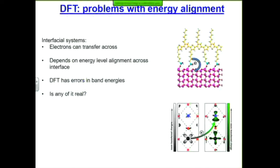Here are some other examples. Density functional theory, because it has the band gap error, has problems describing other things. For example, there's a polymer and a nanowire, and we want to excite the polymer with light and have electrons jump from the polymer to the nanowire. Whether they jump or not depends on whether the energy levels in the polymer and the zinc in the nanowire are aligned correctly. Or in a transition metal oxide, we want the electron to go from one atom to another — that depends on the relative energies. But DFT has problems predicting these relative energies.